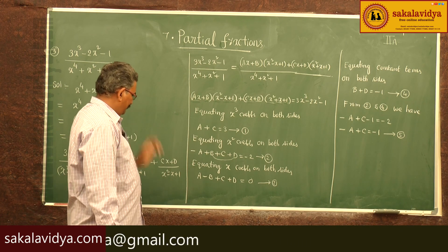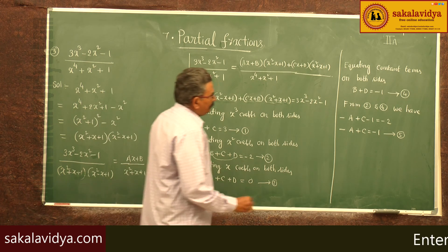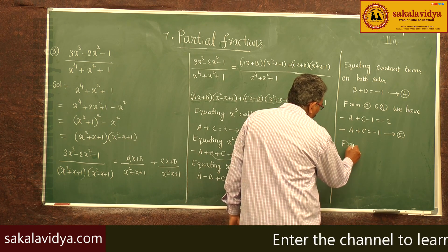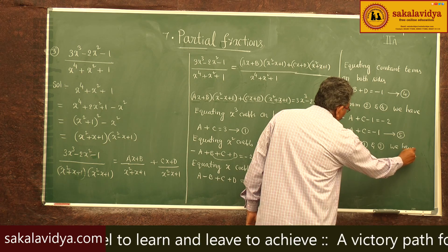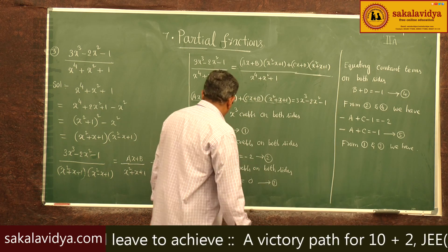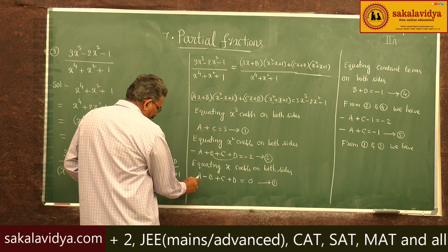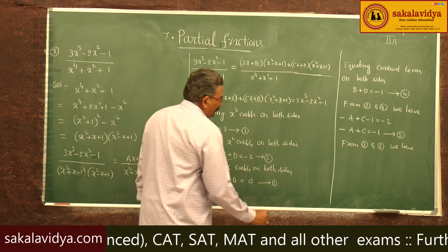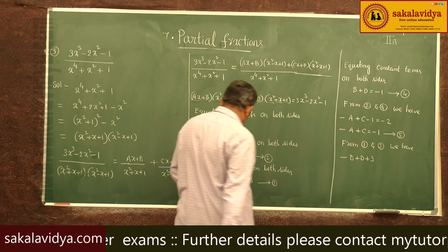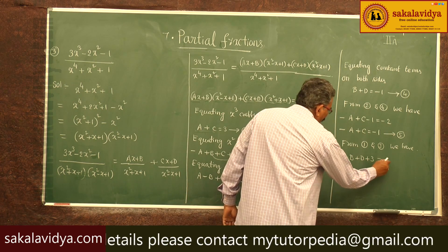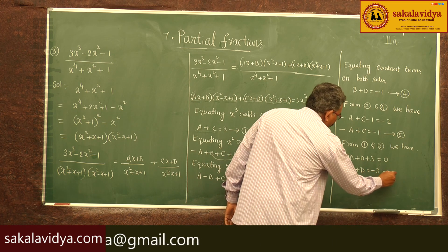Similarly, from equations 1 and 3: a + c = 3. Substituting into equation 3, we get -b + d + 3 = 0. So -b + d = -3 — equation 6.